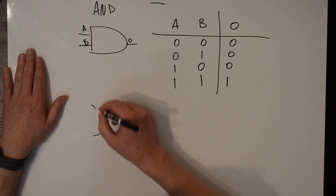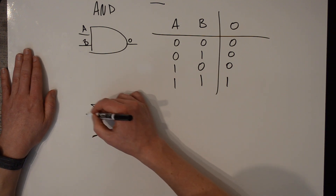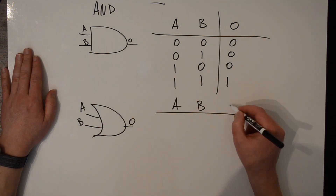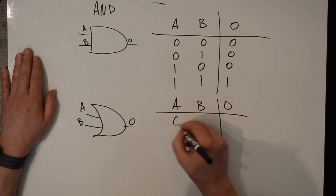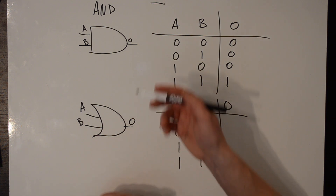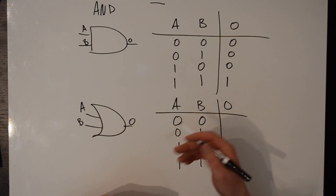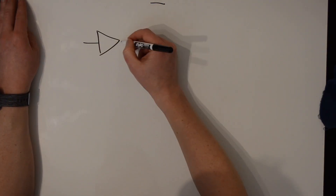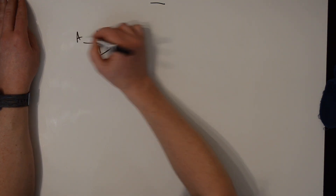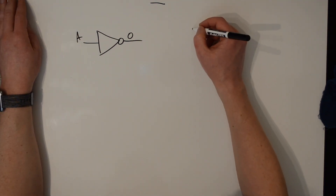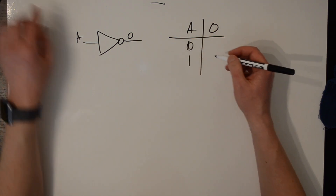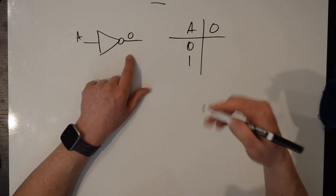The next common gate is the OR gate, drawn like this. It also has two inputs, A and B, and one output. The output of an OR gate is true if either of the inputs is true, or 1, or on — I'll use those terms interchangeably. The outputs are 0, 1, 1, 1. There's also the NOT gate, which only has one input and one output. The output of a NOT gate is the opposite of what the input is: input 0 gives output 1, and input 1 gives output 0.